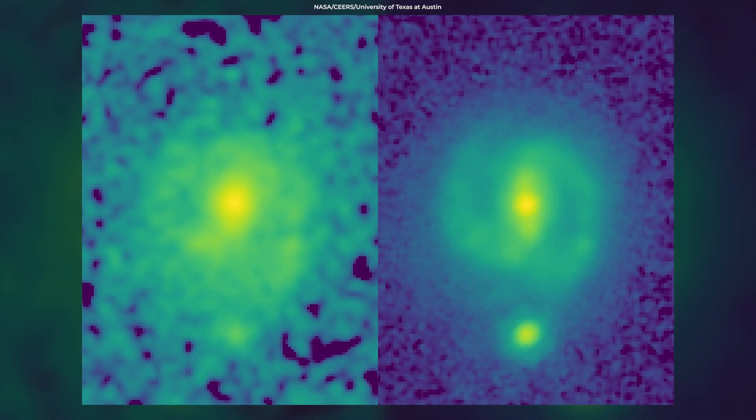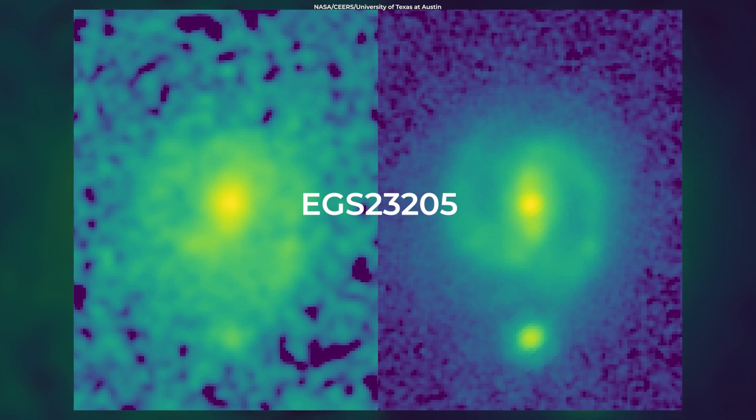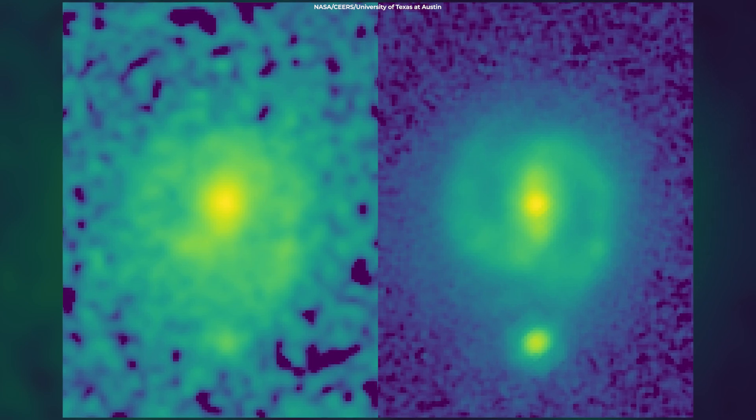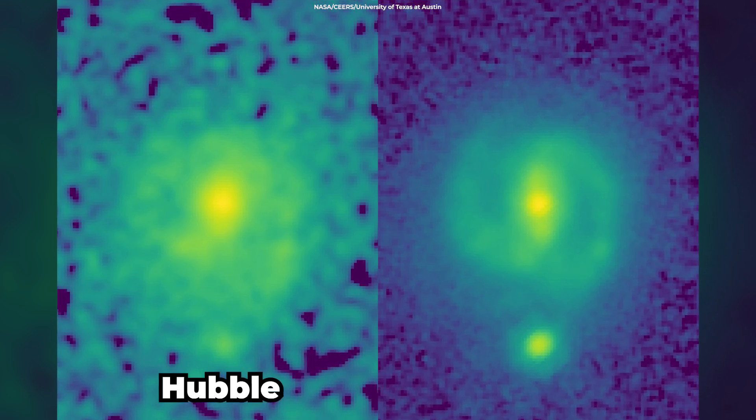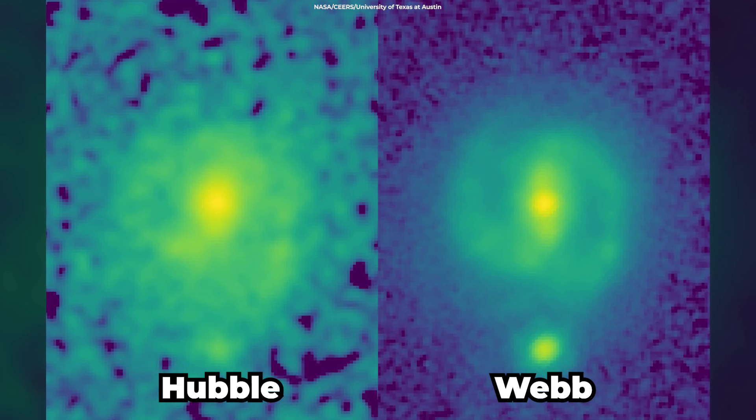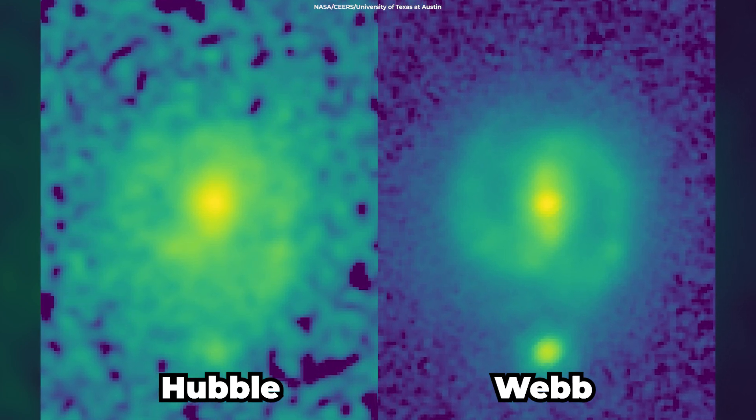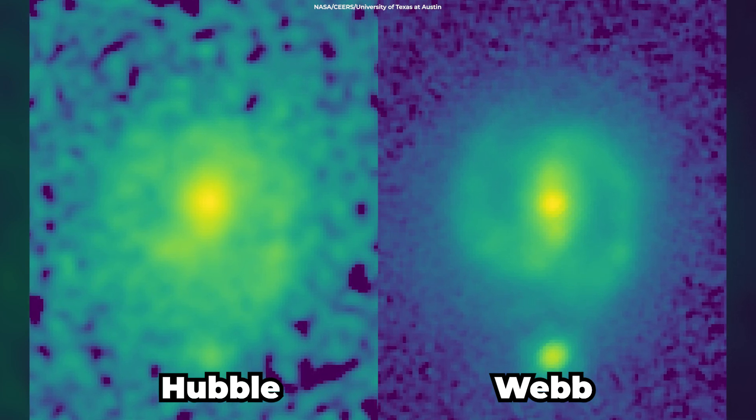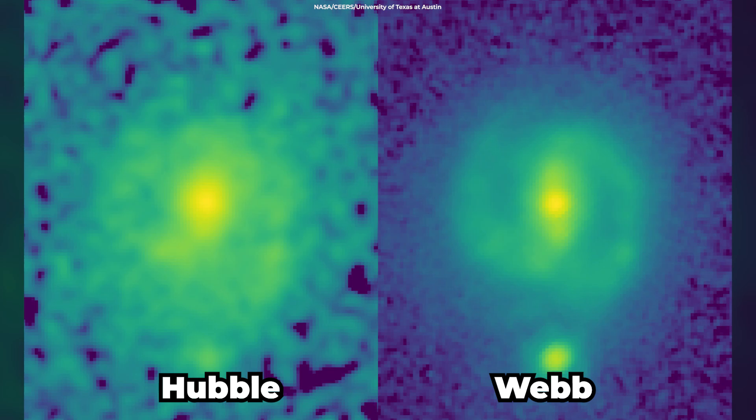Here's a view of the same galaxy known as EGS 23205, located about 11 billion light-years away, as seen from Hubble left and James Webb right. While Hubble's resolution was not high enough for astronomers to make out its spiral shape and prominent stellar bar, you can clearly see these fine details in the Webb image.